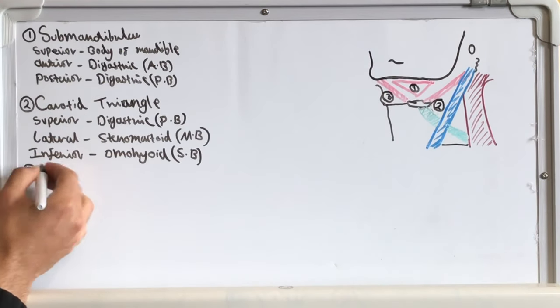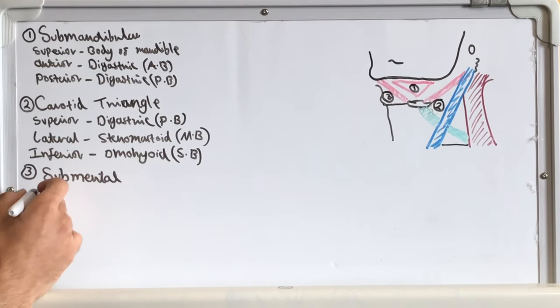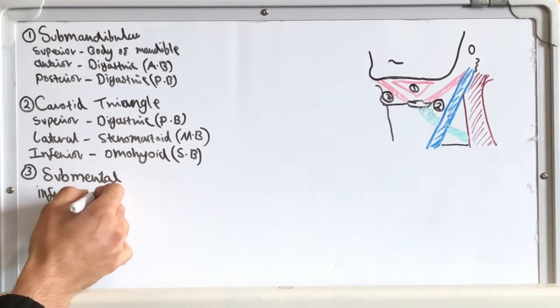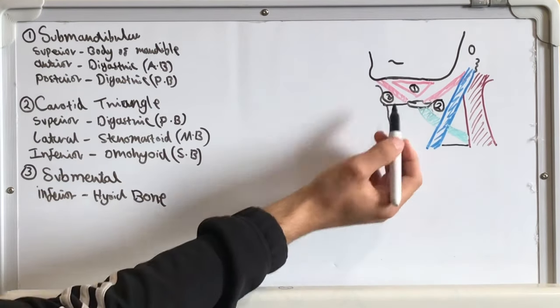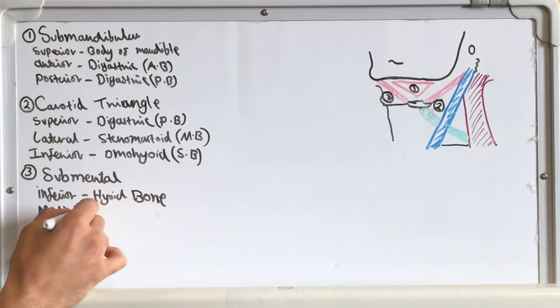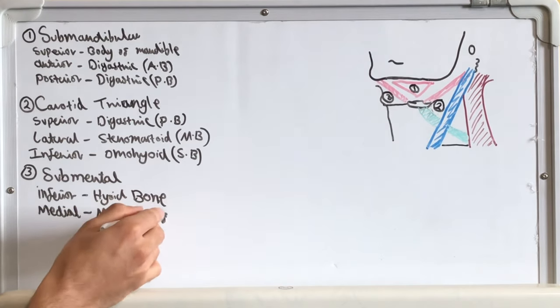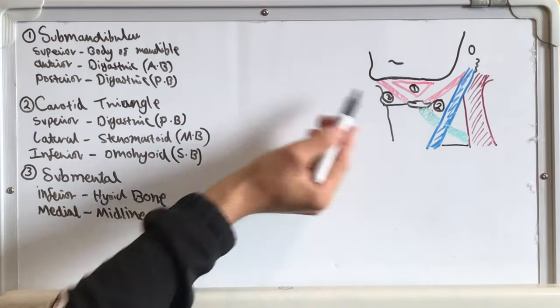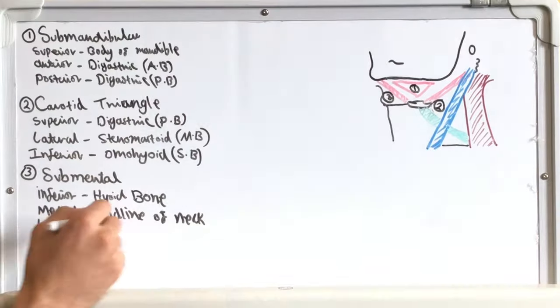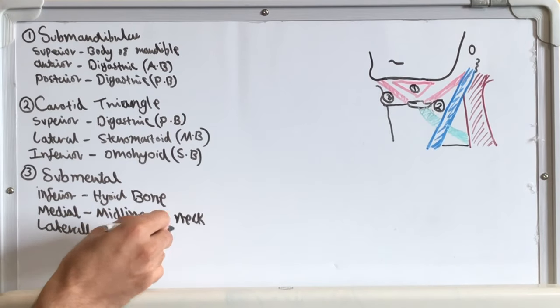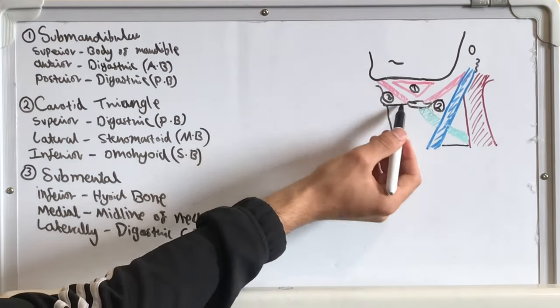The third triangle is the submental triangle. Its inferior border is formed by the hyoid bone, its medial border is formed by the midline of the neck and its lateral border is formed by the anterior belly of the digastric muscle.